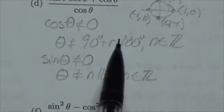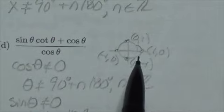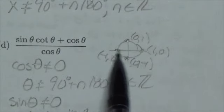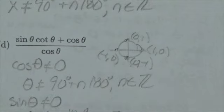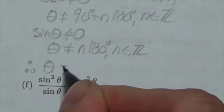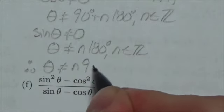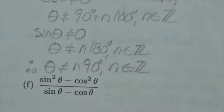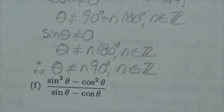With this being the case, notice that my restrictions, just like the previous question, are here, here, here, and here as we go around the unit circle. So I can summarize by saying theta cannot equal multiples of 90, where n is an element of the integers, and that covers all of it.